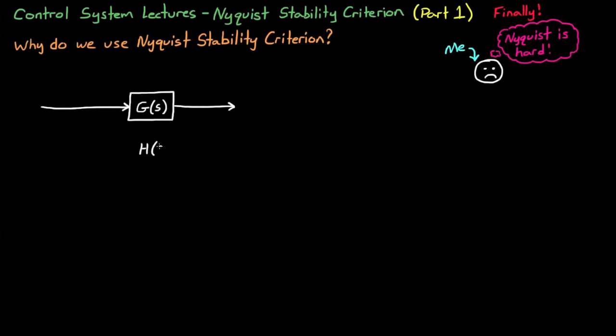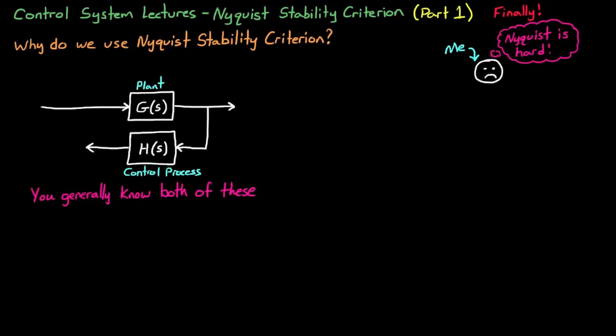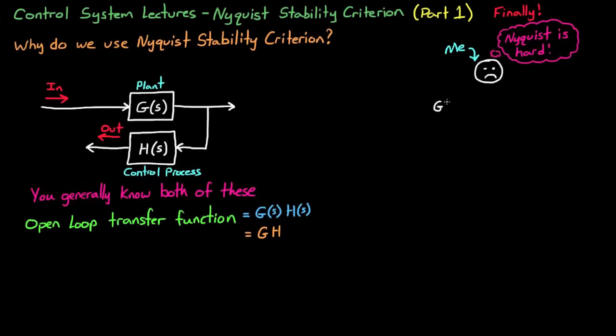Here is a typical open-loop block diagram of plant G of S and control process H of S. You generally have both of these transfer functions for your system since you know the plant that you're trying to control and you get to pick the control process to control it. The open-loop transfer function then just becomes G of S times H of S, but to save time in this video I'm going to drop the of S's and just write G times H.